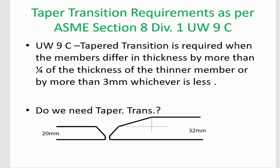The statement itself is a little bit confusing. In order to make it simple, we can go through an example. In our case, we have two plates of different thickness — one is 20 mm thick and another one is 32 mm thick. In order to join these by welding, do we require taper transition? If yes, how much taper transition is required?